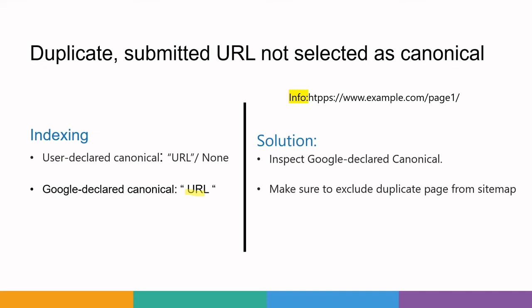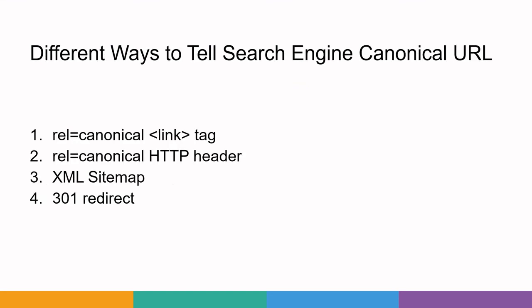There are four different ways to tell search engines your canonical URL. First, by adding the link tag with attribute rel=canonical. Second, using an HTTP header — most commonly used for PDF files, so if a PDF file is a duplicate you can declare the canonical in the HTTP header. Third, by using an XML sitemap. Fourth, by using 301 redirection.